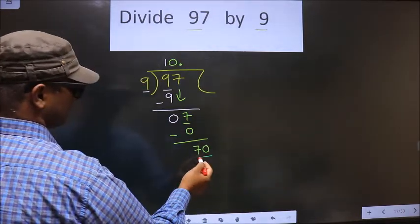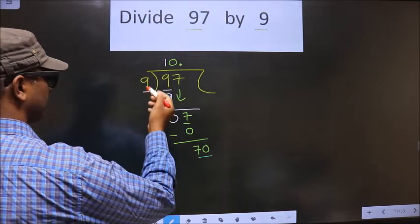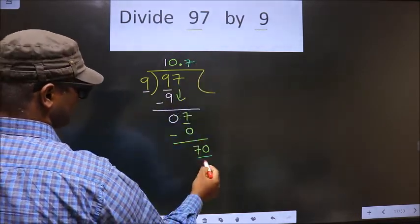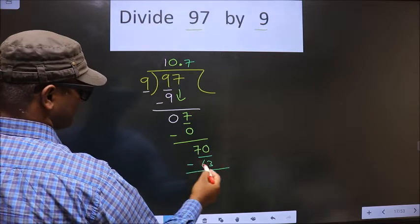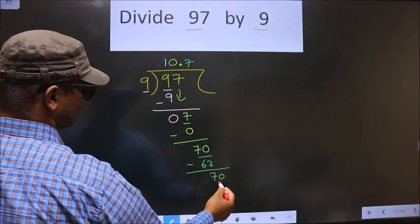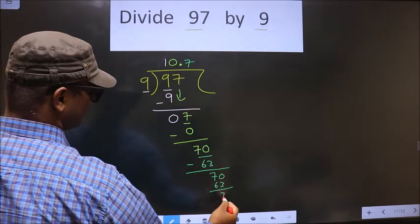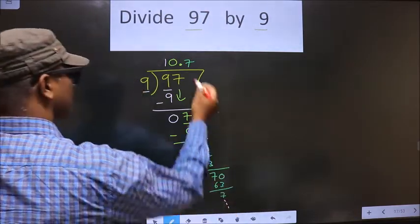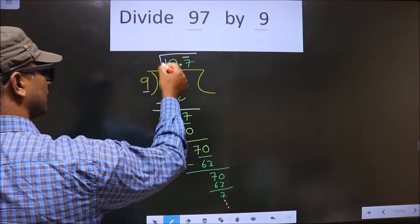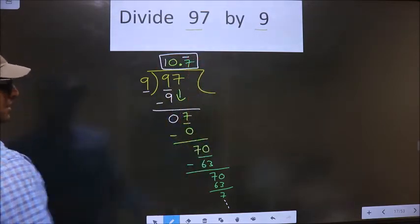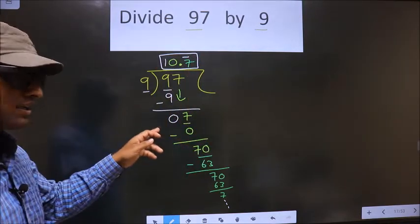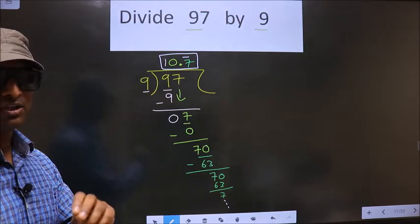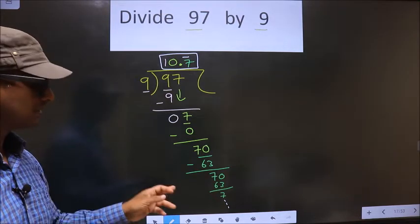Now we have 70. A number close to 70 in the 9 times table is 9 × 7 = 63. Subtract and get 7 again — then 70 again, and it goes on. So the quotient is 7 with a bar, meaning it is a repeating decimal. Make sure you do not make that mistake.